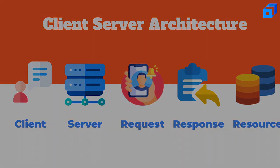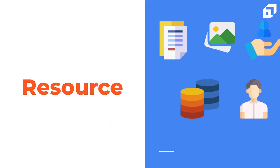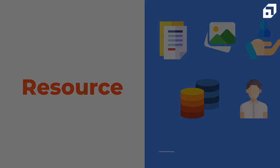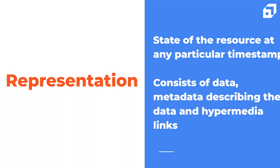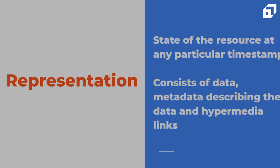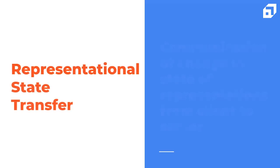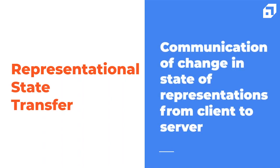A resource can be a document, image, temporal service, a collection of other resources, a non-virtual object such as a person, and so on. The state of the resource at any particular timestamp is known as resource representation, which consists of data, metadata describing the data, and hypermedia links that help clients transition to the next desired state. The server only communicates a particular amount of data to the client and doesn't allow complete access to the database or resource. It is these resource representations that are transferred from server to client, and any change in state is communicated — hence, we call it Representational State Transfer.